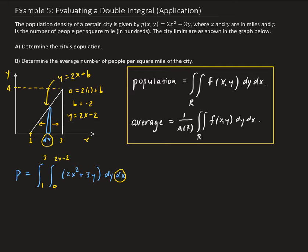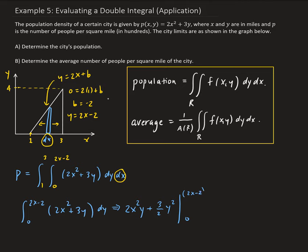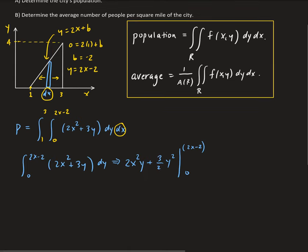The first thing is to integrate the inside part with respect to y. We have the integral from 0 to 2x − 2 of (2x² + 3y) dy. This gives us 2x²y + (3/2)y², evaluated from 0 to 2x − 2. So we plug in the upper bound, giving us 2x²(2x − 2) + (3/2)(2x − 2)².